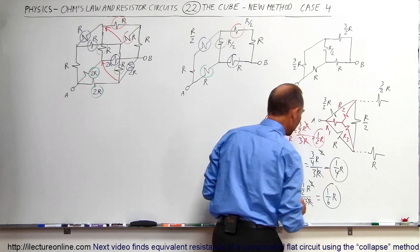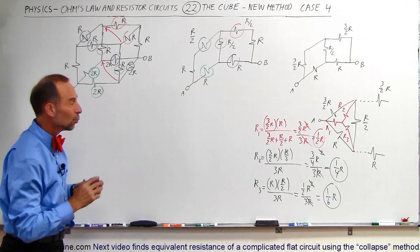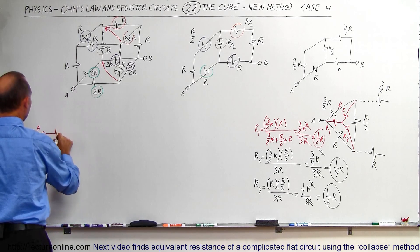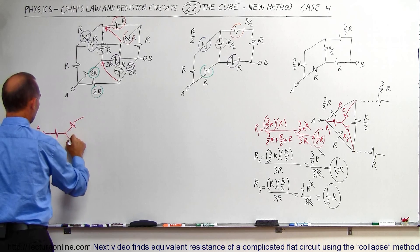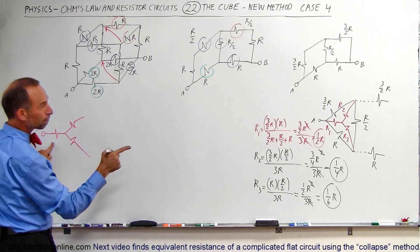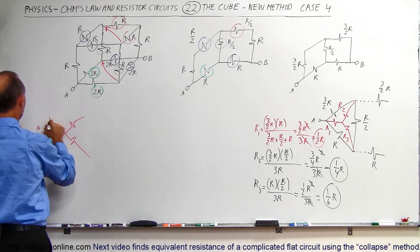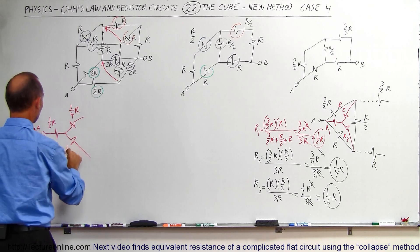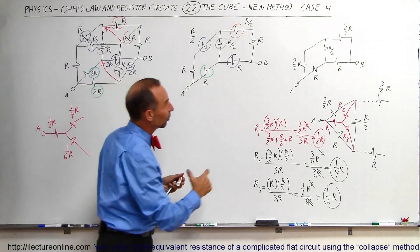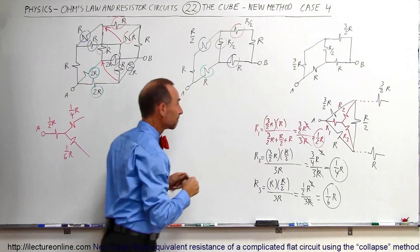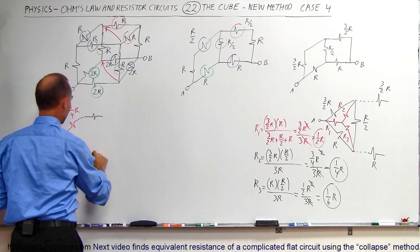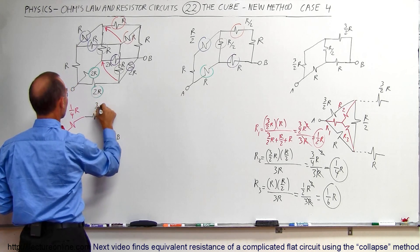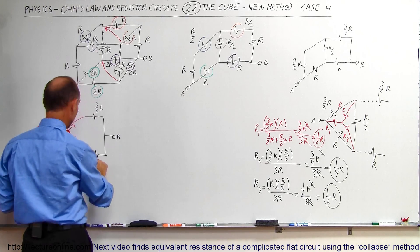Let me redraw this circuit. From point A going into the Y circuit: R1 equals 1/2 R, R2 equals 1/4 R, and R3 equals 1/6 R. Then we still connect that to the two remaining resistors — the top resistor is 3/2 R and the bottom resistor is R — which come together at point B.